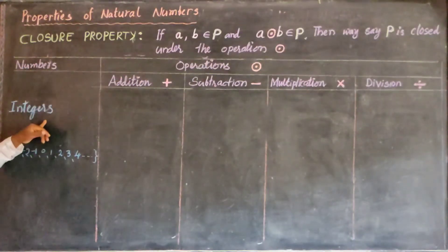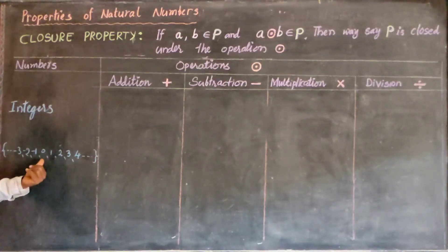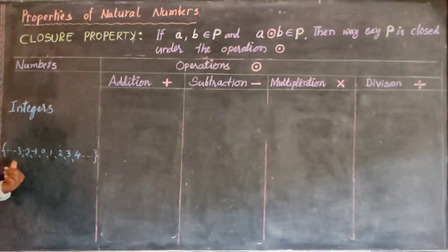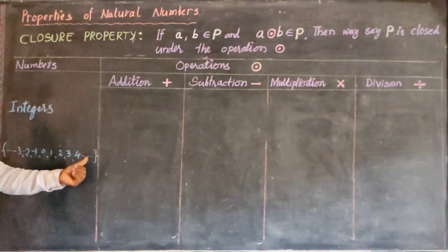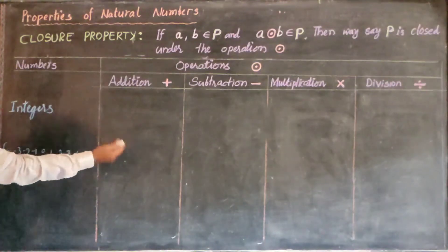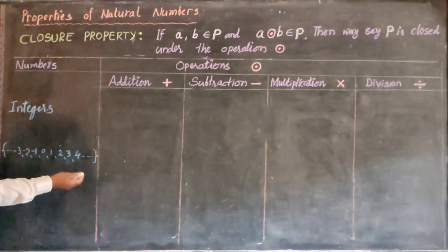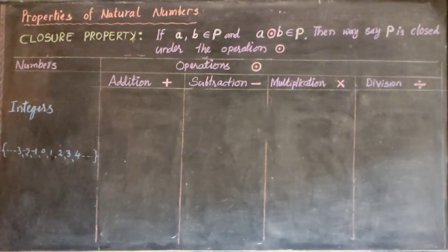What are integers? Integers are negative numbers, positive numbers, and 0. These are the integers: 0, 1, 2, 3, 4, 5, 6, 7 and so on on the right side, and minus 1, minus 2, minus 3, minus 4, minus 6 and so on on the left side.